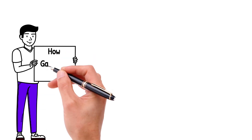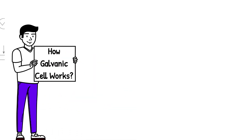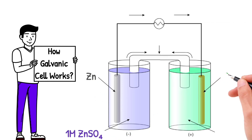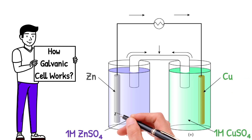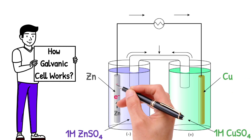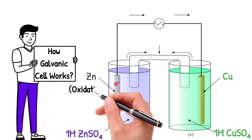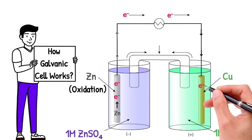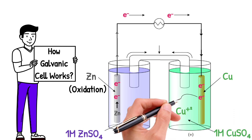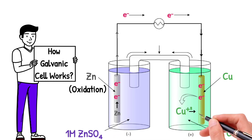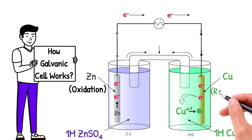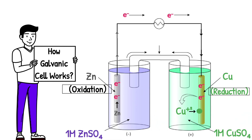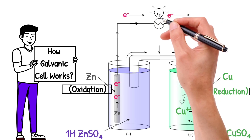In a galvanic cell, the left half cell consists of a zinc metal electrode dipped in a one molar solution of zinc sulfate, and the right half cell is a copper electrode dipped in a one molar solution of copper sulfate. Zinc metal has a greater tendency to lose electrons than copper, so oxidation takes place at the zinc electrode. Electrons flow from the zinc electrode through an external wire to the copper electrode, where they are gained by copper ions in solution — this gain of electrons is reduction. This flow of electrons from the left half cell to the right half cell is known as electric current.